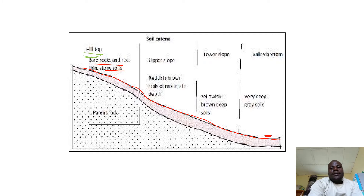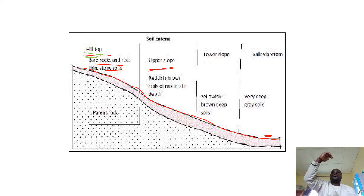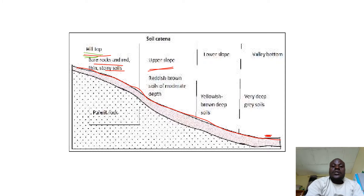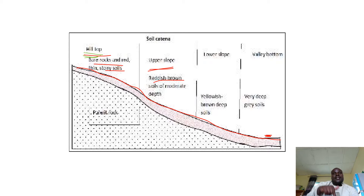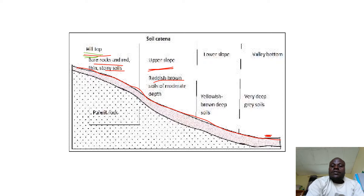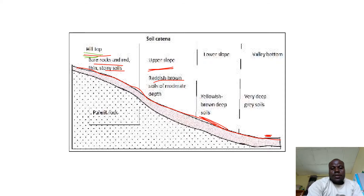Then as you move down, we have the upper slope — this is the free face. Here we have reddish or reddish-brown soils, and the soil profile is still shallow because of the steep gradient. Then as you move from the upper slope, you go to the lower slope, which comes before the valley bottom. The lower slope has yellowish and brown deep soils.